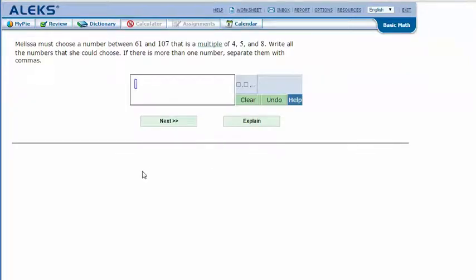Melissa must choose a number between 61 and 107 that is a multiple of four, five, and eight. Write all the numbers that she could choose. If there is more than one number, separate them with commas.